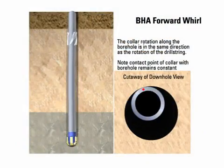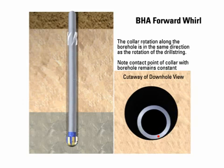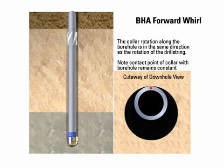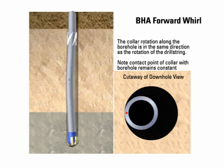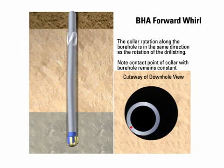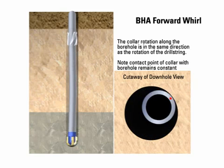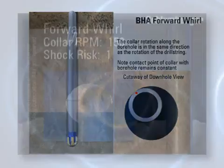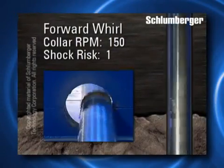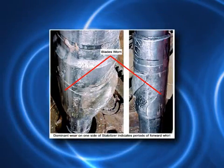Forward whirl is when the BHA rubs the formation along the same part of the collar as the drill string rotates. If the formation is abrasive, excessive wear will occur along the part of the collar that rubs the formation. This wear is seen as flat spots on one side of the collar, or as a single worn blade of a stabilizer. In forward whirl, the BHA still rotates in the same direction as the drill string. Forward whirl can destroy bits and BHAs.